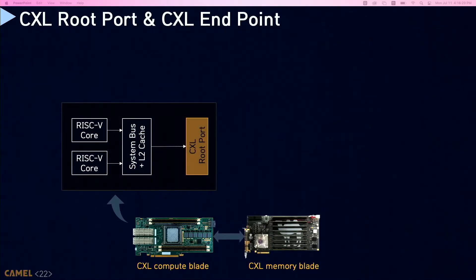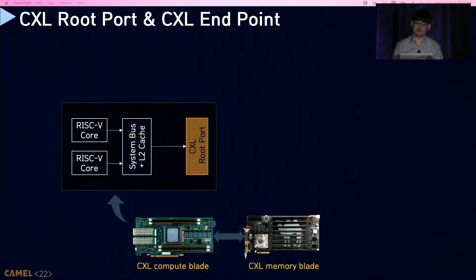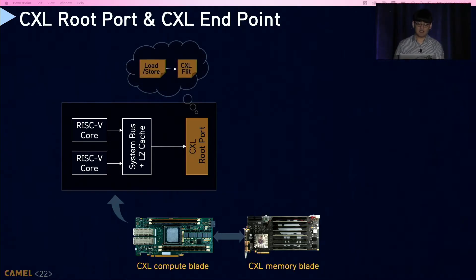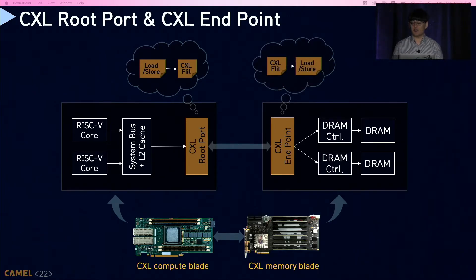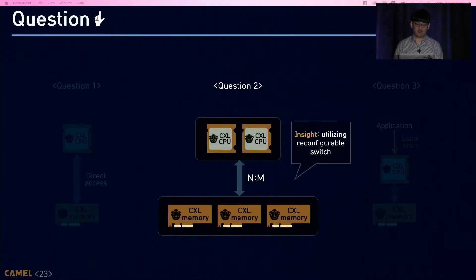The CXL CPU implements a CXL root port, which extends the PCI Express root port with CXL support. On a cache miss, the CXL root port converts the memory request into a CXL flit. The CXL memory device implements a CXL endpoint, which extends the PCI Express endpoint with CXL support. It converts incoming CXL flits into memory requests so that the memory controller can process them.